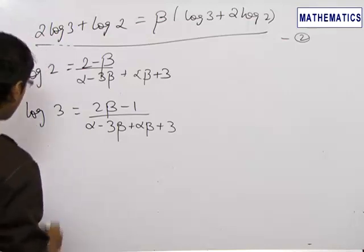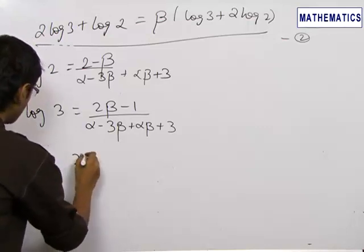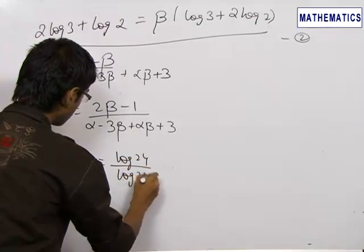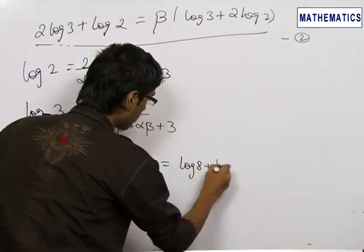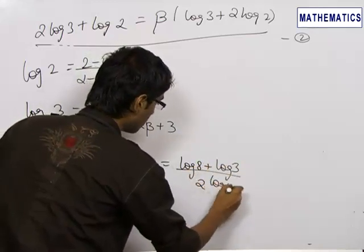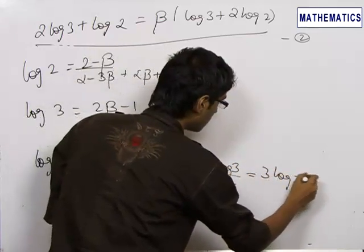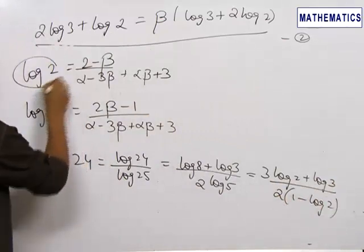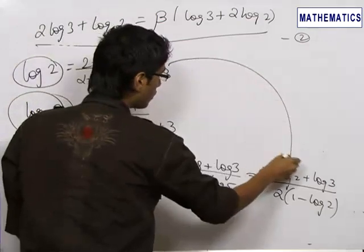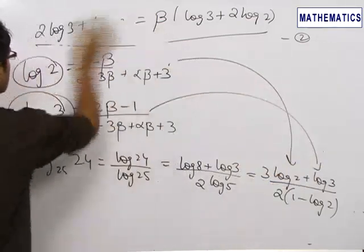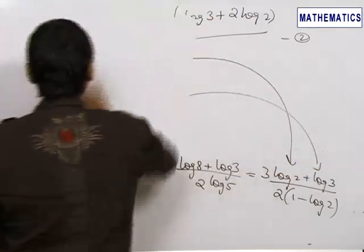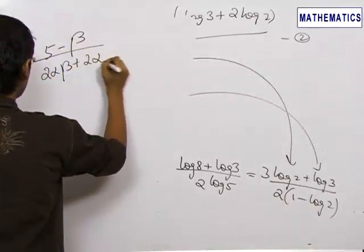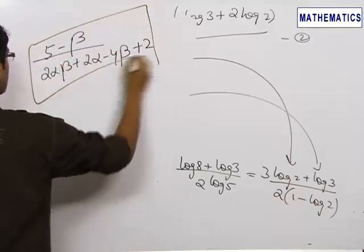Now that we have log 2 and log 3 in terms of alpha and beta, we find log 24 to the base 25, which equals log 24 upon log 25, equal to (log 8 + log 3) upon 2 log 5, which is (3 log 2 + log 3) upon 2(1 minus log 2). Substituting the values of log 2 and log 3, we get the final answer: (5 minus beta) upon (2 alpha*beta + 2 alpha minus 4 beta + 2).